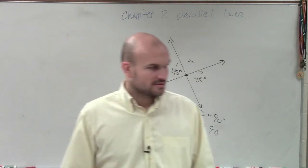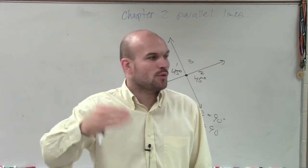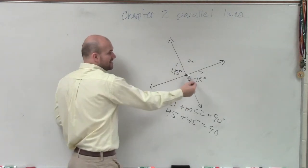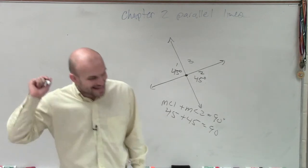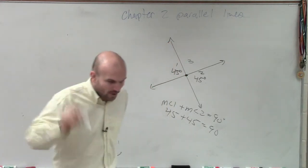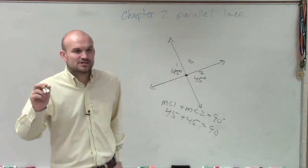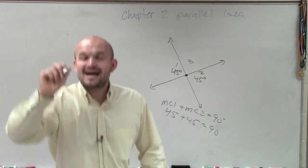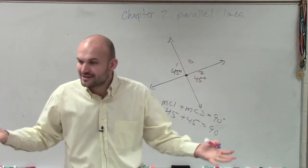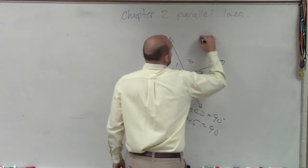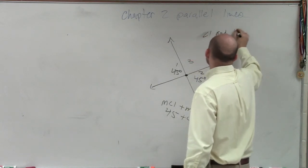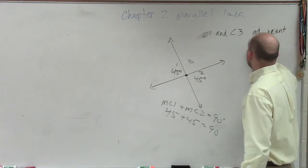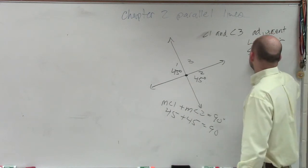Adjacent is exactly correct, but there's something more detailed that we've used. Linear pair. Why are they a linear pair? Because they are adjacent and they are created with two opposite rays. And what are linear pairs? They're supplementary. So angle 1 and angle 3 are adjacent, and since they're adjacent, we know they are a linear pair, and since they are a linear pair, we know they're supplementary.